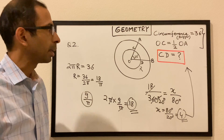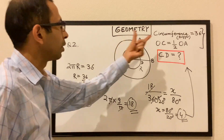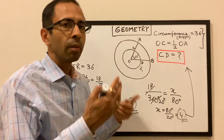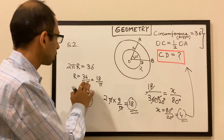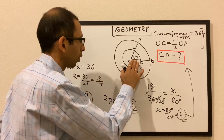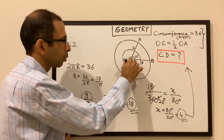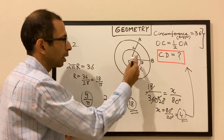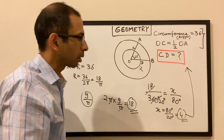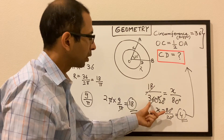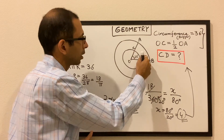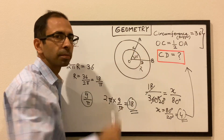Just to quickly reiterate: we had the circumference of the bigger circle, found the radius of the bigger circle, then found the radius of the smaller circle, found the circumference of the smaller circle, and then used this ratio to find the length of CD.